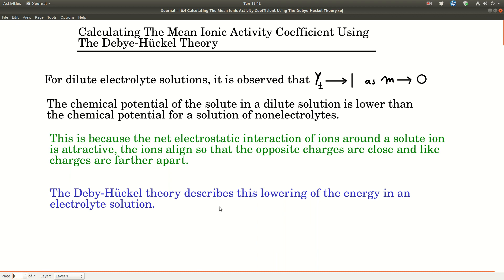The reason for this is the net electrostatic interaction of the ions. When you have a solute ion, the electrostatic interaction is attractive because the oppositely charged ions will preferably be closer to that ion, and that lowers the energy. In a sodium chloride solution, there will be more chloride ions around the sodium ion than sodium ions, basically due to Coulomb's Law.